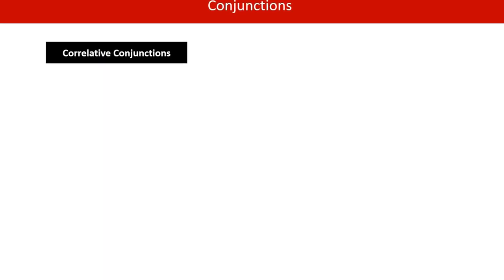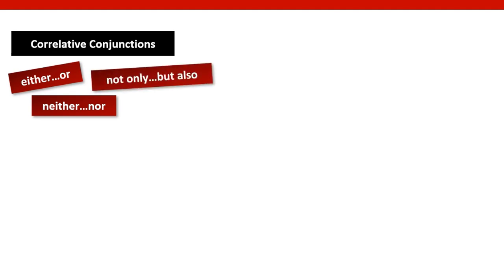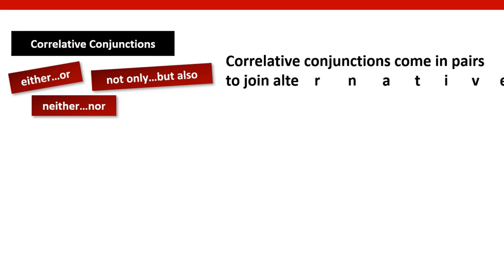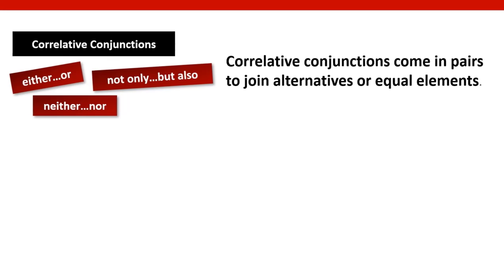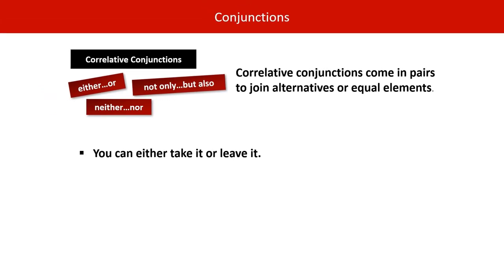Let's move on to the last type: correlative conjunctions. The three most common are: either/or, neither/nor, and not only/but also. Correlative conjunctions come in pairs to join alternatives or equal elements. For example, 'You can either take it or leave it.' Either/or is our correlative conjunction linking two alternatives.